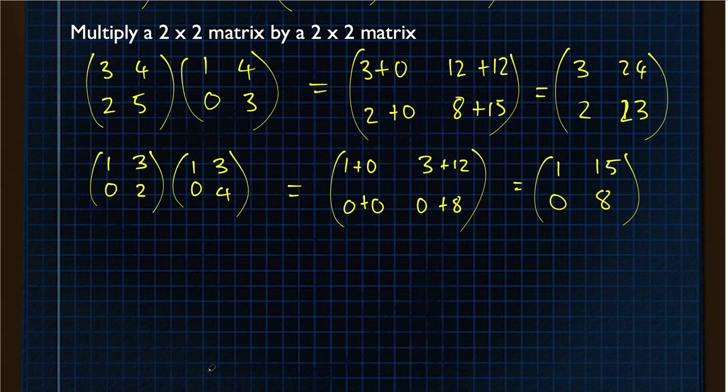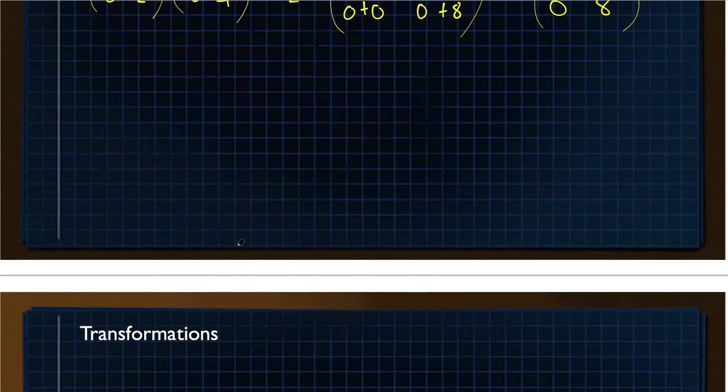That's multiplying a 2 by 2 matrix by a 2 by 2 matrix. And again useful for transformations of the unit square which comes in later. Transformation is the effect that a matrix has, multiplying by a matrix has on a point.